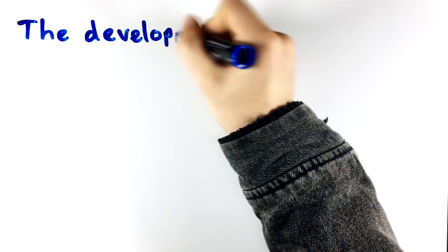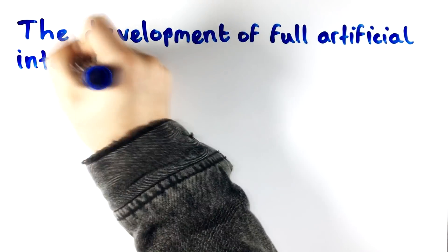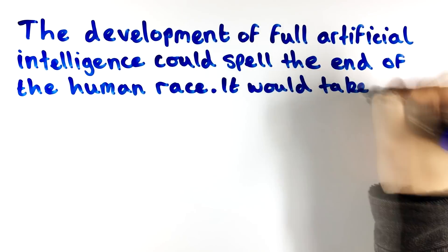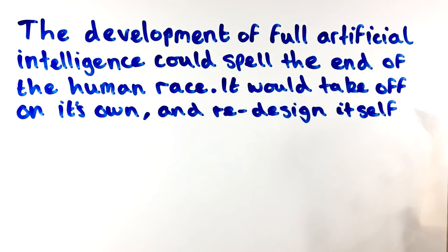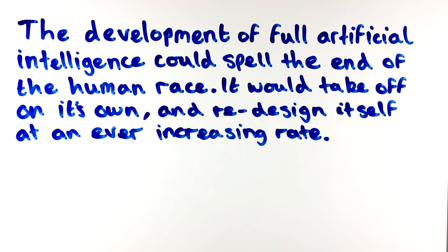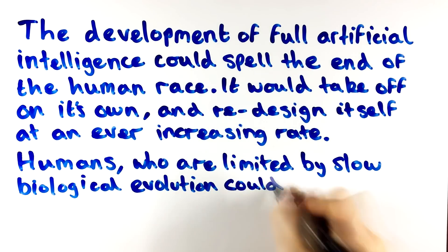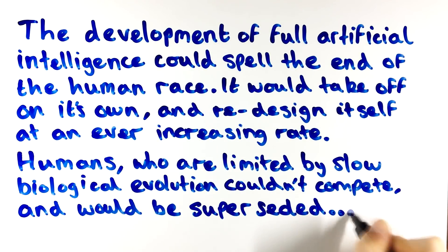When asked about AI, Stephen Hawking once said, the development of full artificial intelligence could spell the end of the human race. It would take off on its own and redesign itself at an ever increasing rate. Humans, who are limited by slow biological evolution, couldn't compete and would be superseded.